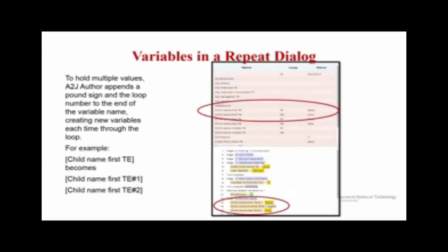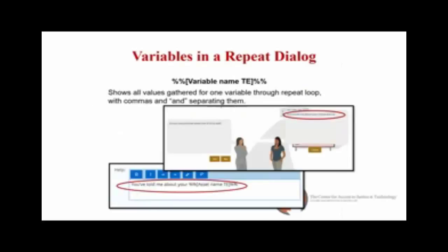All the values are still held in that one variable. Every time you go through the loop, you get a new variable called 'child first name TE#1,' 'child first name TE#2,' up to however many times you've gone through. All ten names are stored within 'child first name TE.' You can call that out to remind the end user what they've told you about.